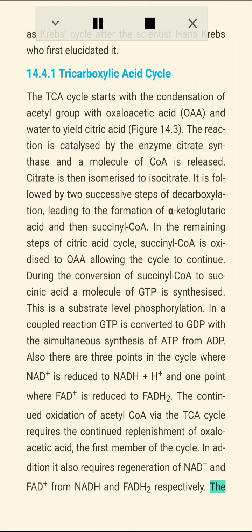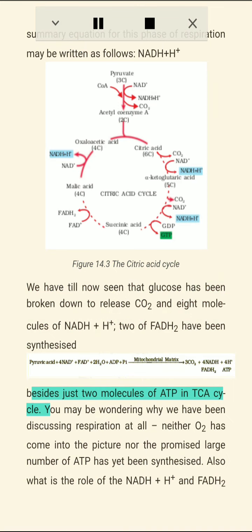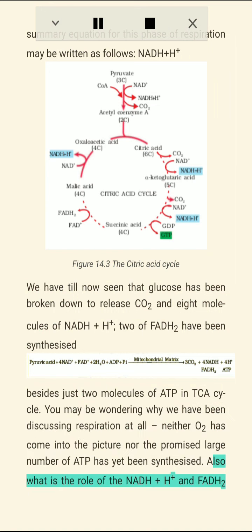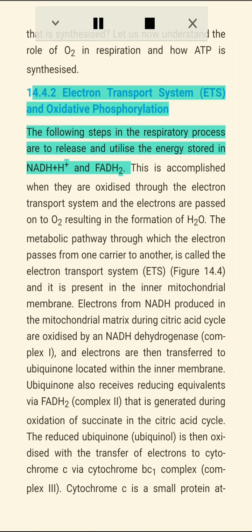The continued oxidation of acetyl-CoA via the TCA cycle requires the continued replenishment of oxaloacetic acid — the first member of the cycle — and also requires regeneration of NAD+ and FAD+ from NADH and FADH2 respectively. We have till now seen that glucose has been broken down to release CO2, and 8 molecules of NADH+H+ and 2 molecules of FADH2 have been synthesized, besides just two molecules of ATP in the TCA cycle. You may be wondering why we have been discussing respiration at all — neither O2 has come into the picture nor the promised large number of ATP has yet been synthesized. Let us now understand the role of O2 in respiration and how ATP is synthesized.